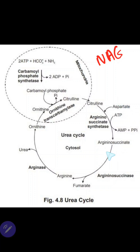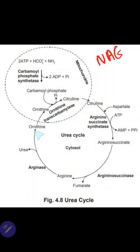Arginosuccinate is cleaved into fumarate and arginine via arginosuccinate lyase enzyme. The fumarate synthesized here enters the TCA cycle, while arginine undergoes hydrolytic cleavage by arginase enzyme and is converted into urea and ornithine. Urea is excreted in the urine via the kidney, while ornithine — utilized in the second step — is regenerated in the fifth reaction. Thus, the urea cycle is also called the ornithine cycle.